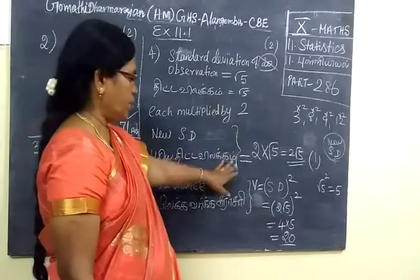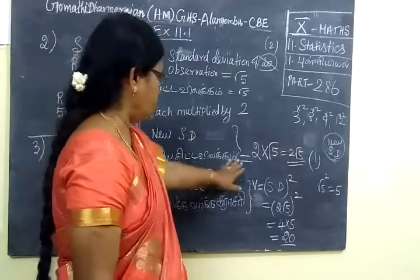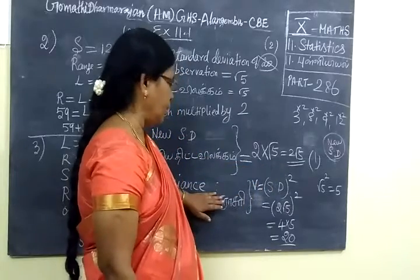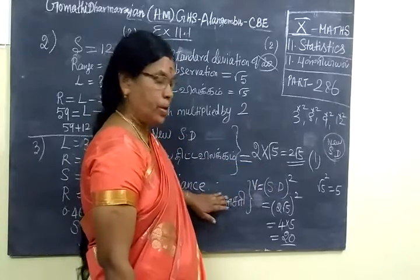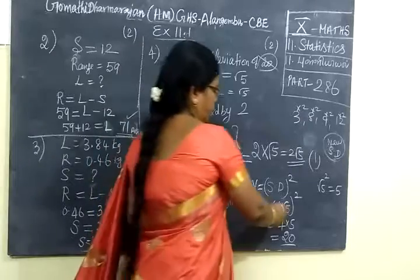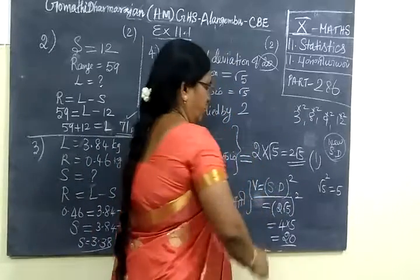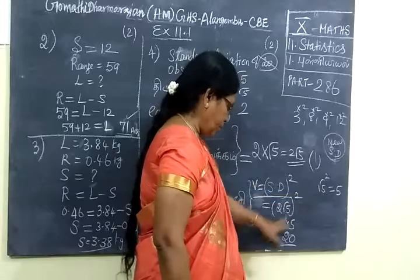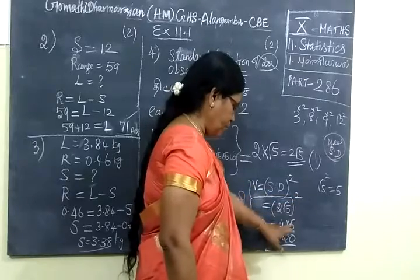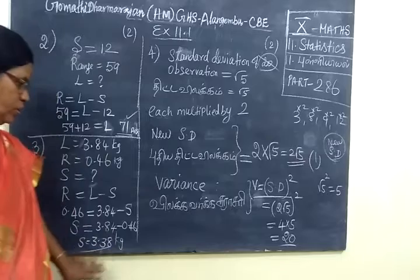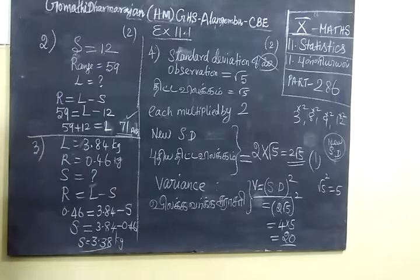Again I am explaining. This way we can do this. This is the variance. Variance — in this, standard deviation also has a formula. 2 squared is 4, root 5 squared is 5. So the answer is 20. All this in command for two more questions.